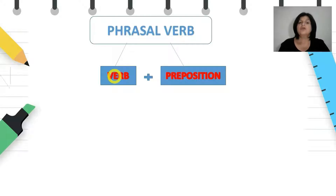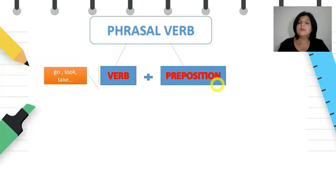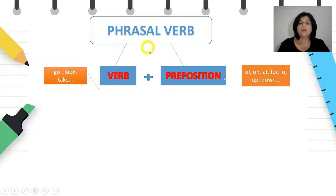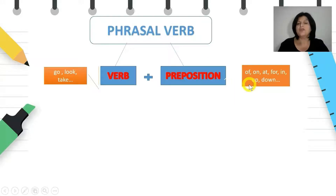Verbs such as go, look, take, put, come, and many other action verbs — combined with a preposition, which is a small word that connects other words in a sentence, such as off, on, at, for, in, up, down, and many others.